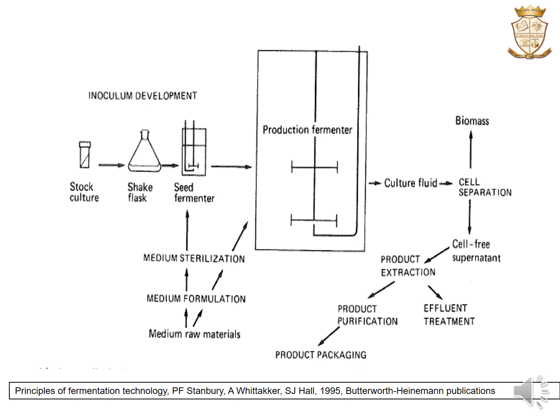Inside the fermenter, the microorganisms will grow and all the necessary conditions for microbial growth will be provided. Once growth is over, the culture fluid will be separated using cell separation techniques so that the biomass and supernatant are separated. If the product is in the biomass, the biomass is collected and the product separated from it. If the product is in the supernatant, the cell-free supernatant is used for product extraction, after which the product is finally purified and packaged.